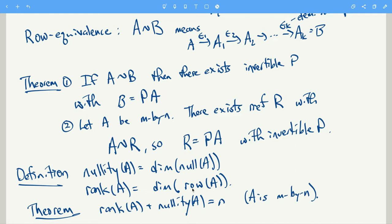And then the theorem, the rank nullity theorem says that rank of A plus nullity of A is N, where that N is the number of columns of A.